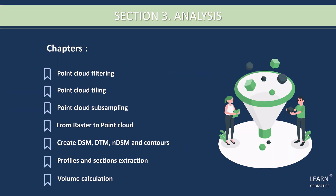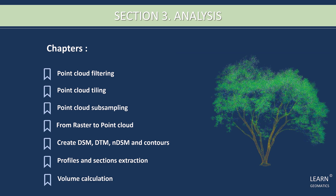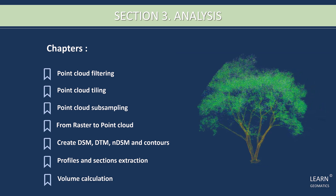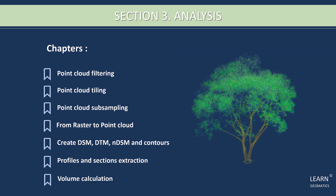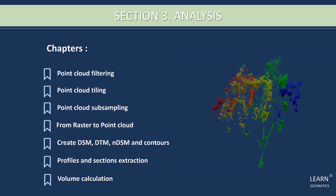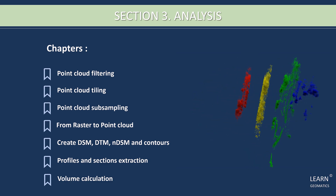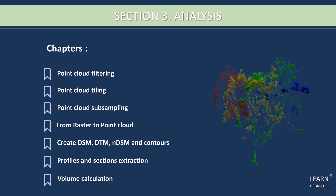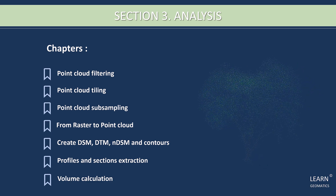Moving on to section three — this part of the course is all about analysis. We'll dive into Point Cloud filtering, tiling, and subsampling, as well as how to assign raster values to Point Clouds. You'll learn how to create DSM, DTM, NDSM, and contours from your data. We'll even cover how to extract profiles and sections, and calculate volume. This section is packed with practical tips and techniques to help you get the most out of your Point Cloud data.